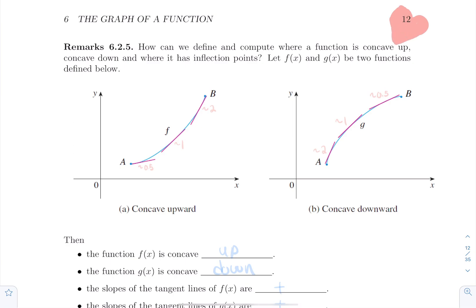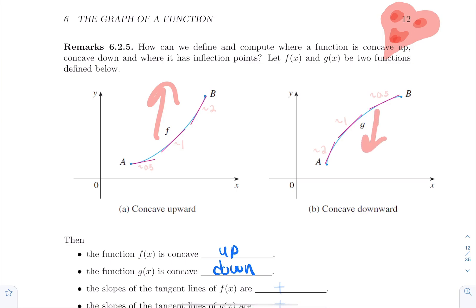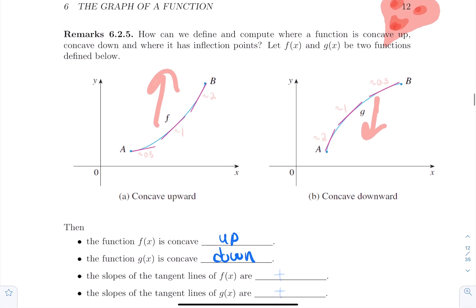Starting example: the infamous f and g functions — the first one being concave up and the other one being concave down. We might sometimes use the terminology concave upward or downward. Concavity is linked to tangent lines: a function is concave up if it curves above those tangent lines, and concave down if it curves below them.